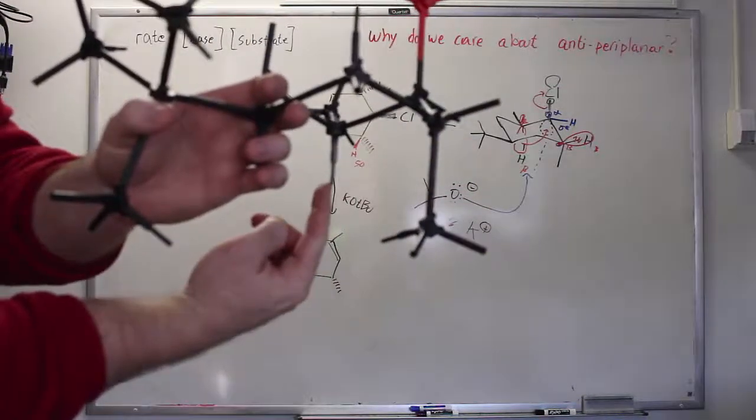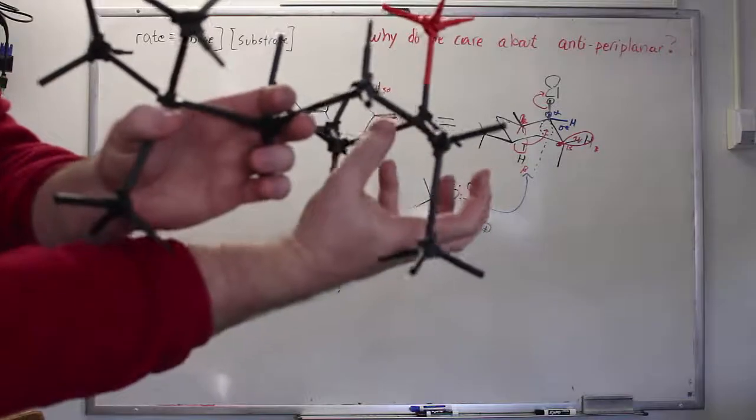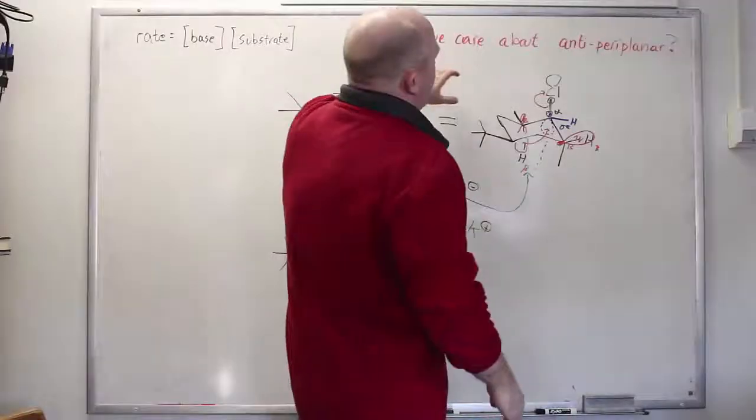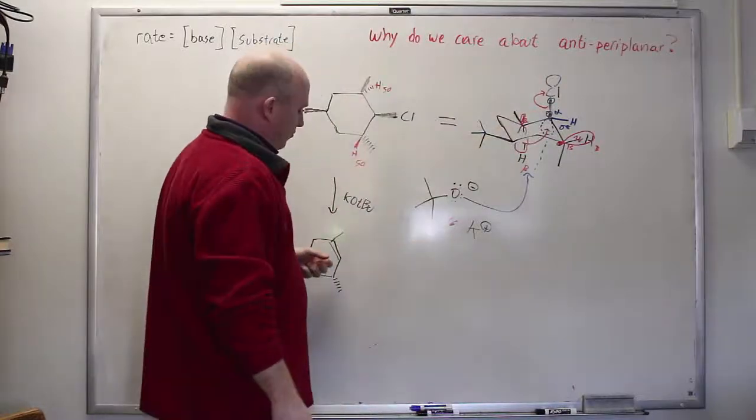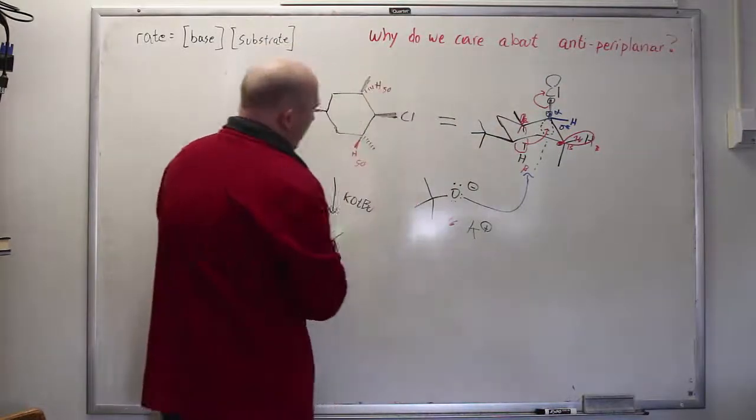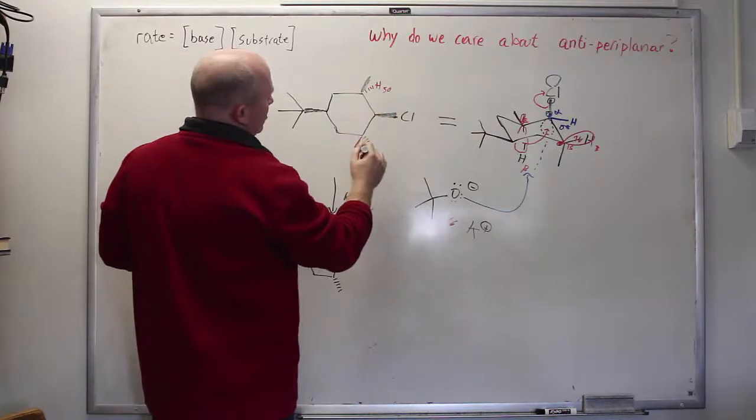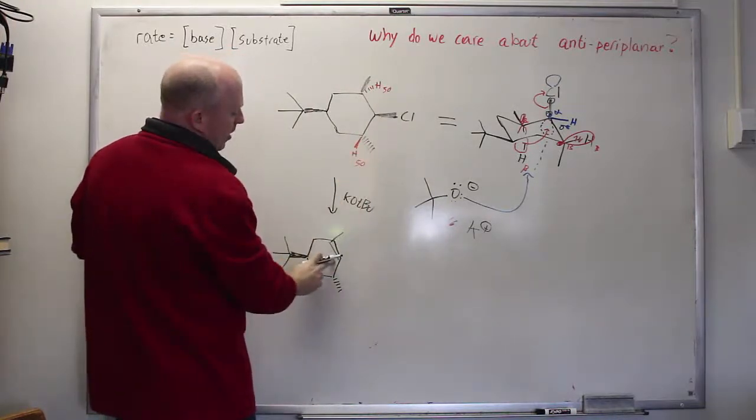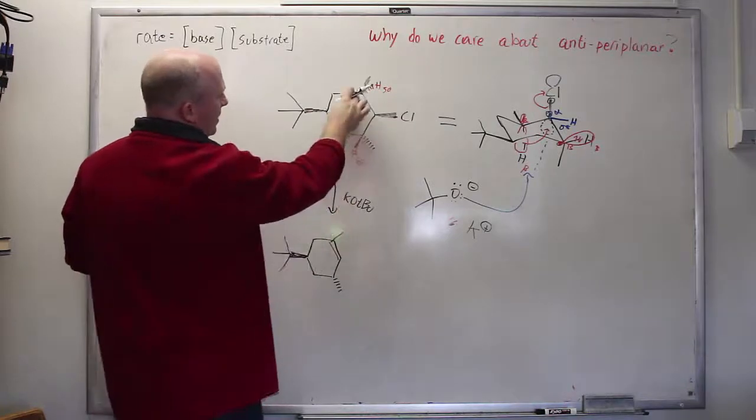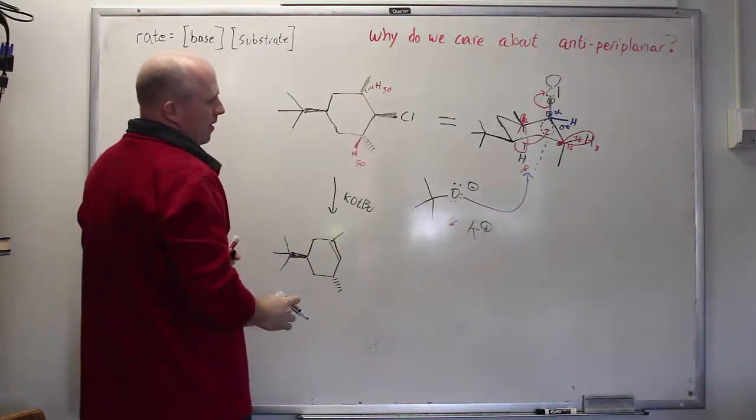The base comes in, tries to remove this proton. Electrons flow to the sigma star orbital that's sitting right there. The anti-periplanar arrangement tells us about possible regioisomers. Said another way, in principle either of these two hydrogens could have been abstracted. In practice only one regioisomer is formed. You only make the double bond on one side and not on the other.